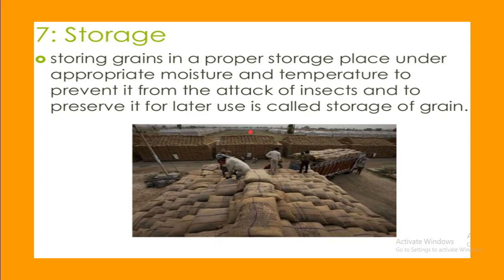The final practice is storage. Storing grains in a proper storage place under appropriate moisture and temperature to prevent attack by insects and preserve them for later use is called storage of grains. Storage facilities like godowns are used to store food grains for periods ranging from three months to over one year. Thanks for watching.